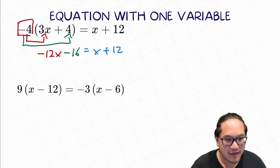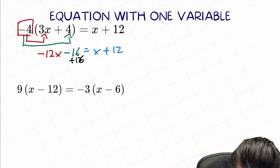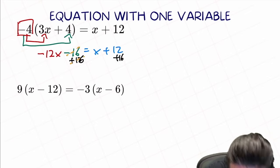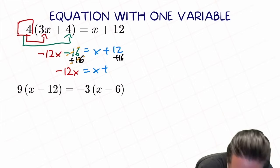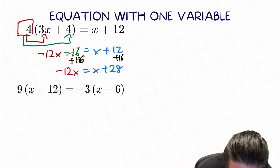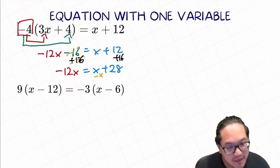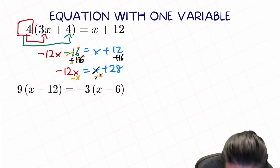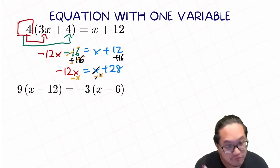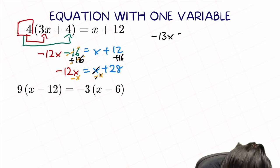So now let's move some numbers around — we keep the x on the left and the numbers on the right. First, plus 16 on both sides will cause negative 16 to cancel out. So we have negative 12x equal to x plus 12 plus 16, equal to 28. Next, we need to move the x from the right side to the left. We do minus x on both sides — this x gets canceled out. So negative 12x minus x equals negative 13x, equal to 28.